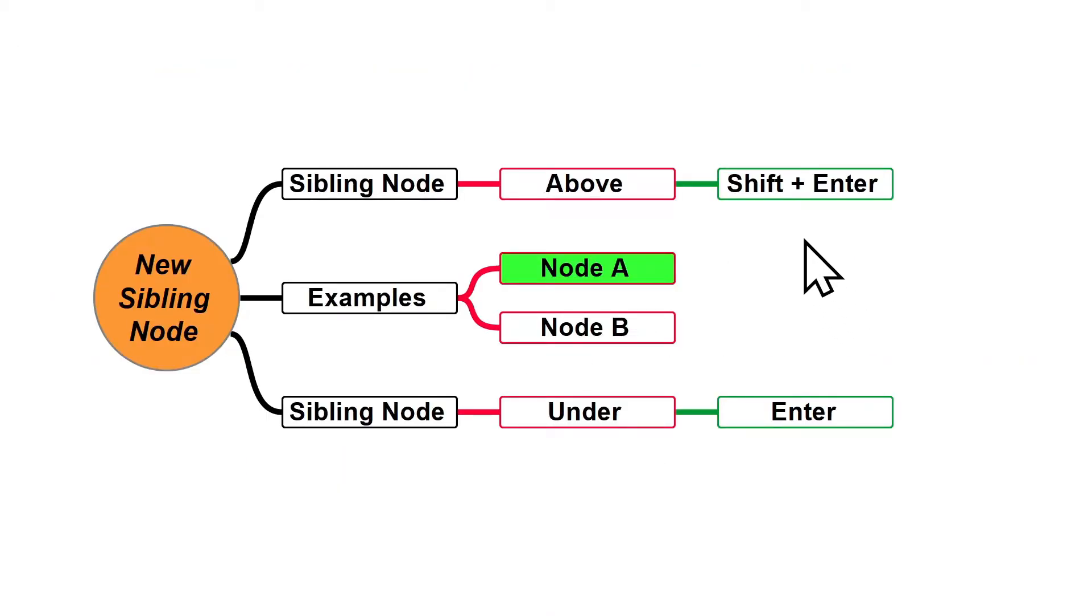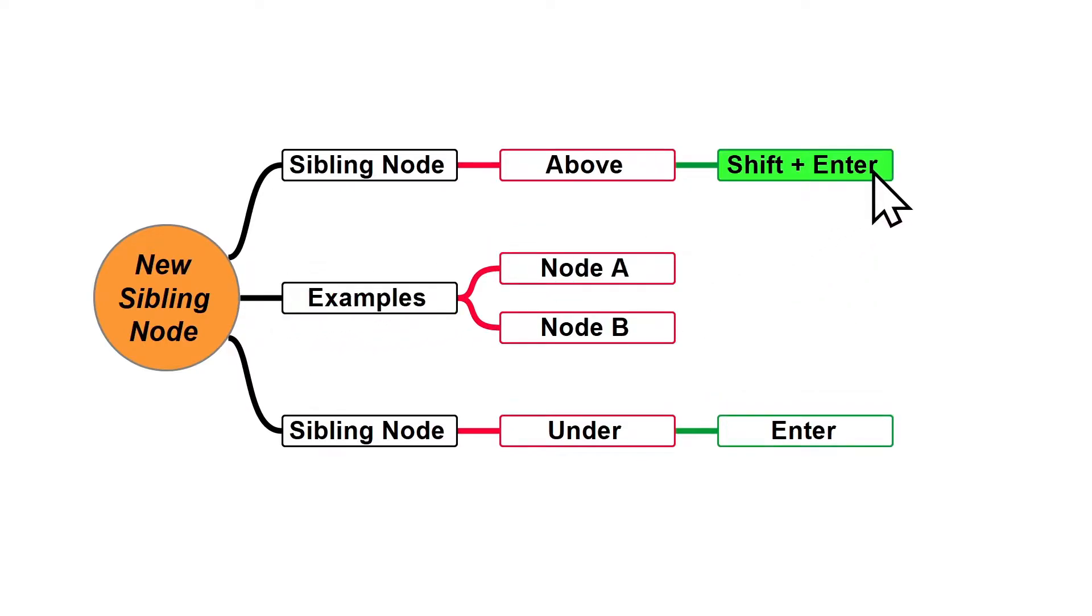If you want to create a new sibling node above a node, just select the node you want and press Shift Enter. I'm going to select node A and press Shift Enter.